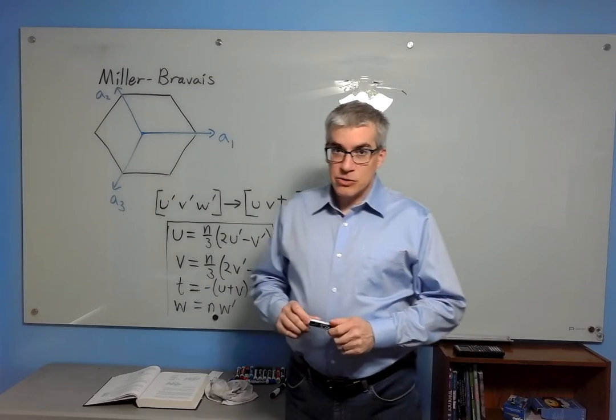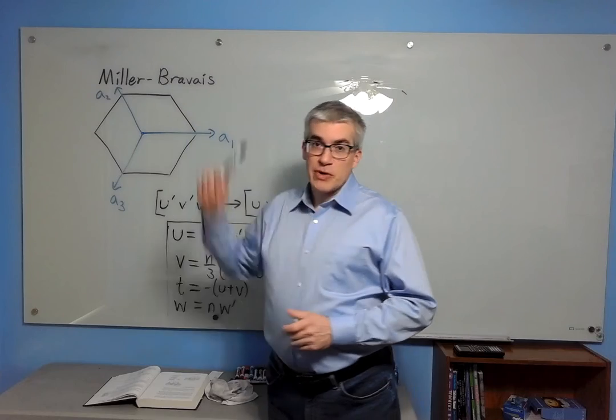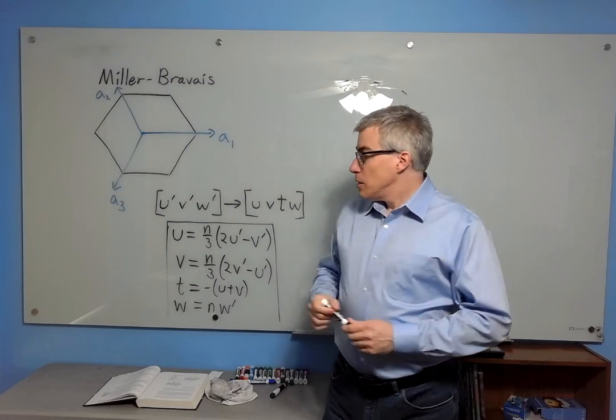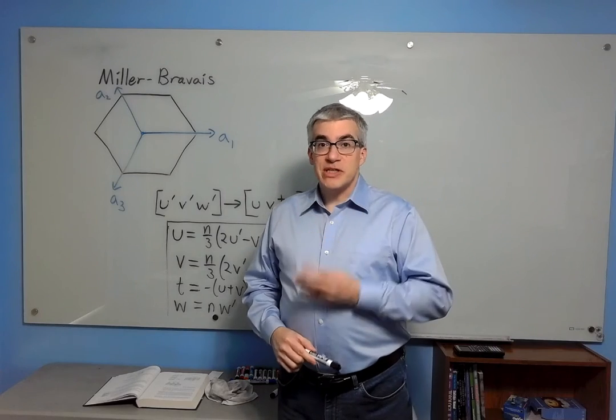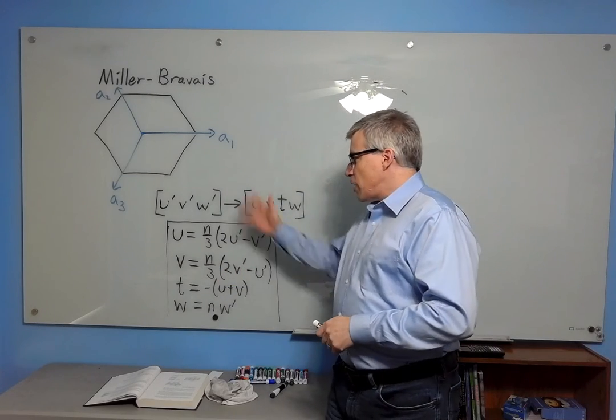In the case of a hexagonal crystal, we have what are called Miller-Bravais coordinates. Now, it's actually a four-coordinate system, which is redundant. Why are they doing that? Why are they making it more complicated?